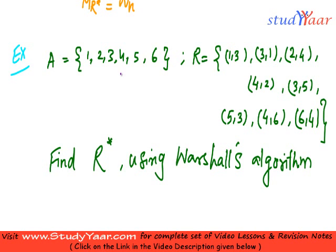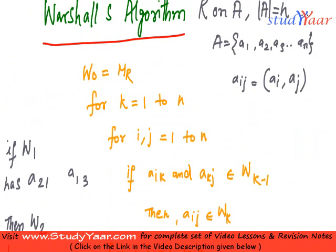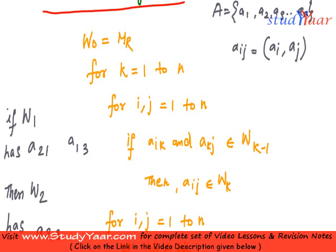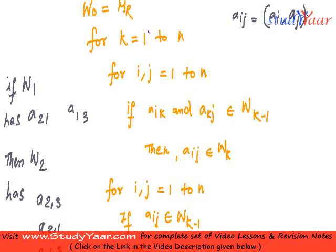Now let us take an example. Let us suppose that I have been given a relation and I have been asked to find the transitive closure for that using Warshall's algorithm. So let us see how we are going to proceed.